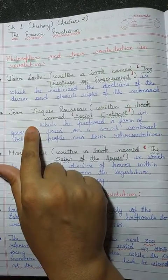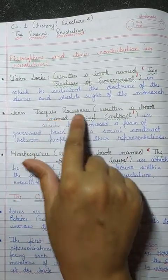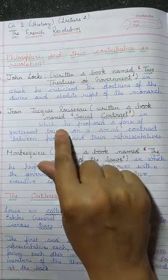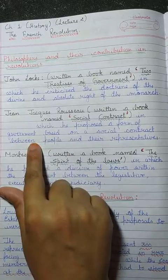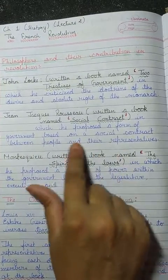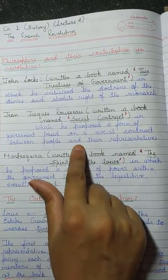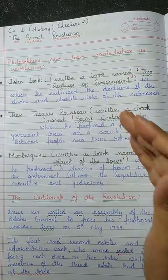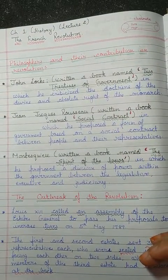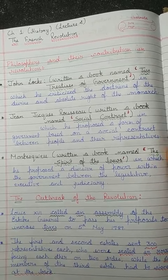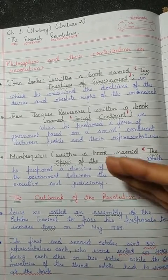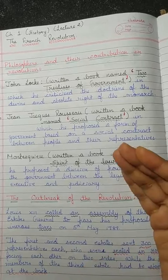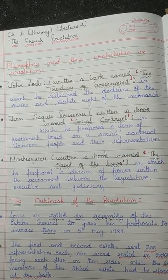The second philosopher was Jean-Jacques Rousseau. He wrote a book named Social Contract, in which he proposed a form of government based on a social contract between people and their representatives. He said that the king and the people should have a good relationship, and that government should work for the people, not for exploitation.